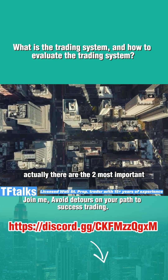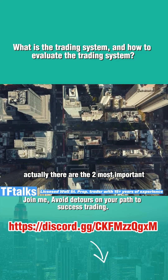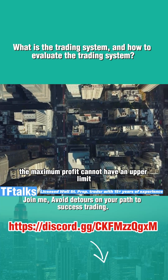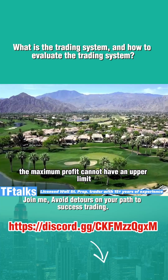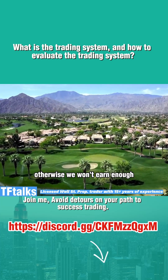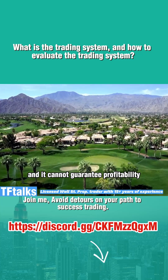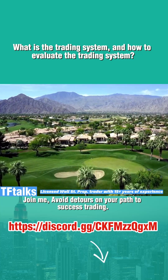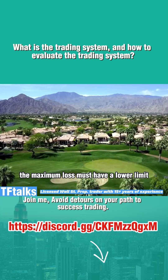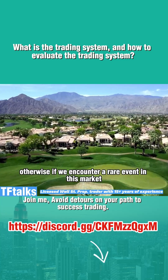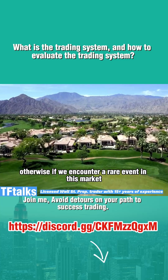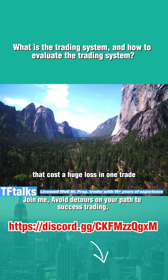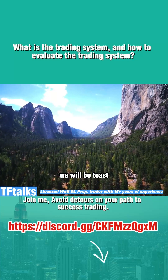Actually, these are the two most important and most essential points. The maximum profit cannot have an upper limit, otherwise we won't earn enough and cannot guarantee profitability with a high probability. The maximum loss must have a lower limit, otherwise, if we encounter a rare event in this market that causes a huge loss in one trade, we will be toast.